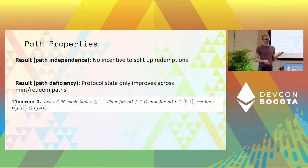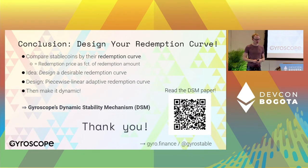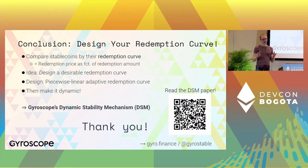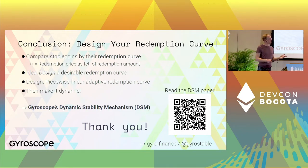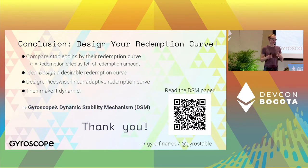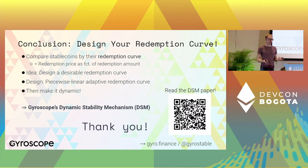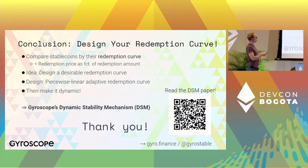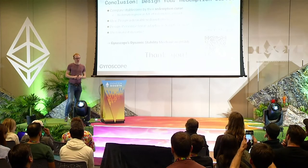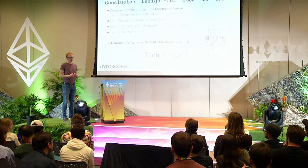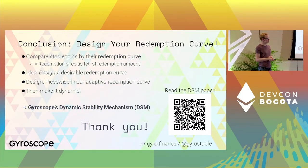To conclude: if you're taking away anything from this talk, it's that you can design your redemption curves when building a stablecoin system. This is a very attractive way to get good properties from your system. It's also a useful tool to compare different stablecoins and think about whether a stablecoin design is actually solid. I showed you a design for one desirable redemption curve, and then how to make it dynamic and react to market conditions. We have implemented this in Gyroscope's dynamic stability mechanism. Gyroscope is our new stablecoin — launch is planned towards the end of the year. Hopefully all these properties are going to make Gyroscope very robust.